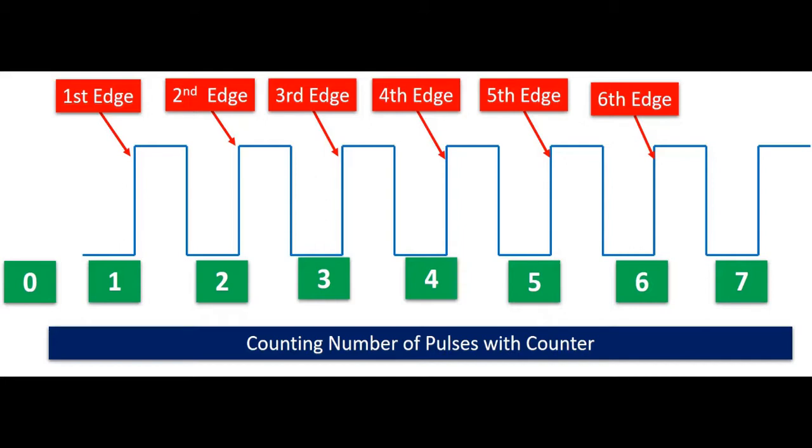Initially, there is no rising edge, hence the counter value is zero. Now let's see how to measure speed of DC motor using TM4C123 timer as a pulse counter.